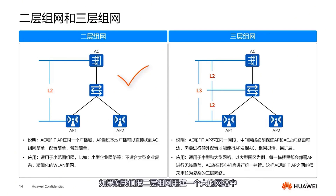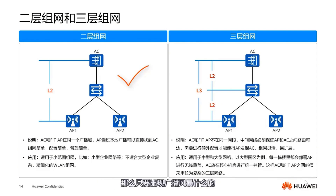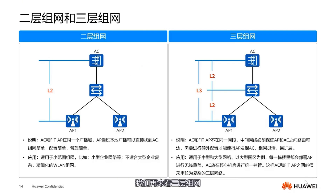Why is that? Because if layer 2 networking is used in a large network, potentially with hundreds or thousands of APs, then APs and ACs are in one broadcast domain. If a broadcast storm occurs, the impact area naturally becomes much larger. Thus, it's not suitable for large-scale networking. Generally, it's considered viable for networks not exceeding 200 devices.